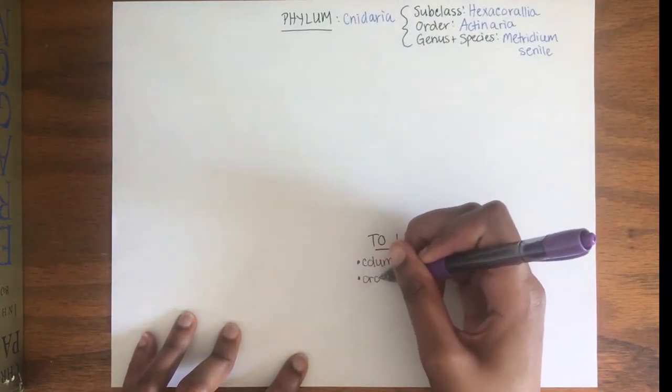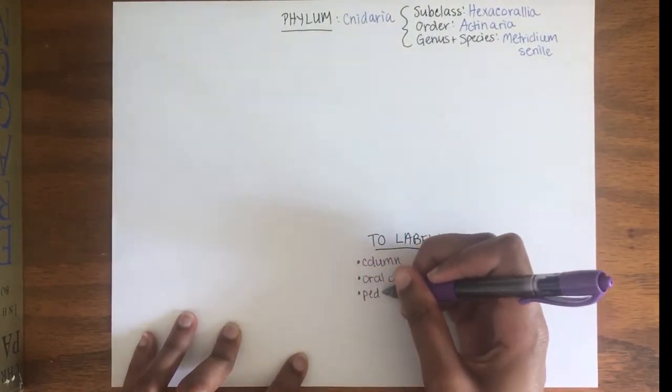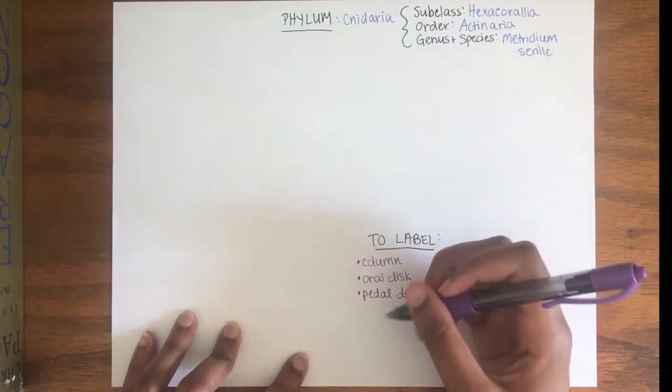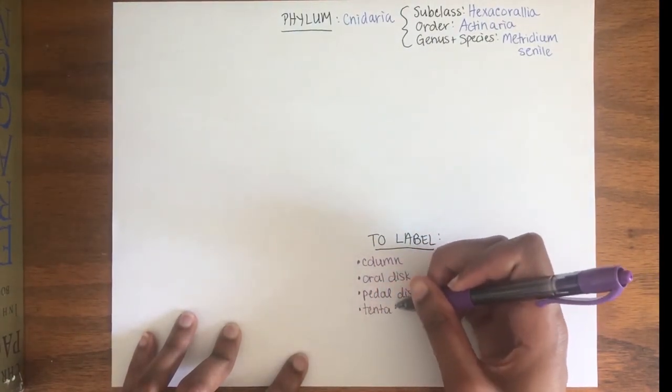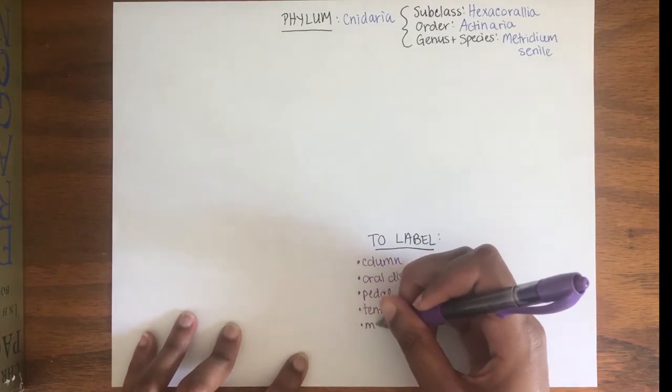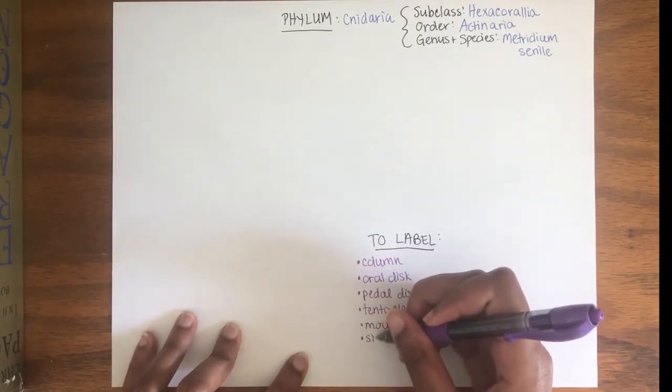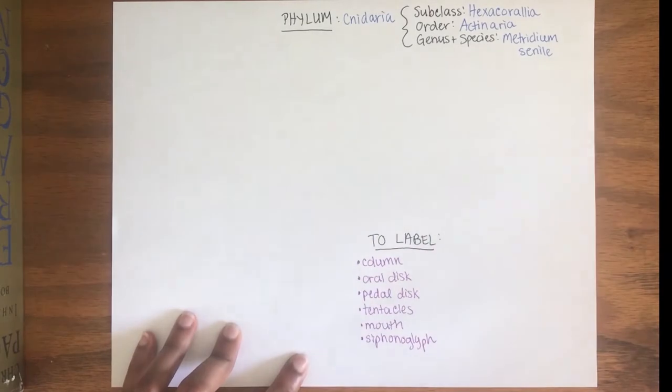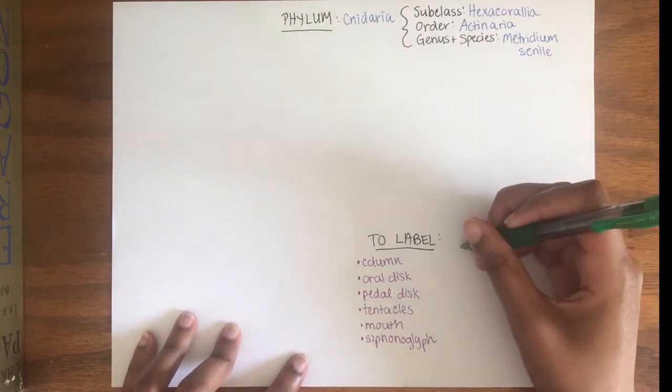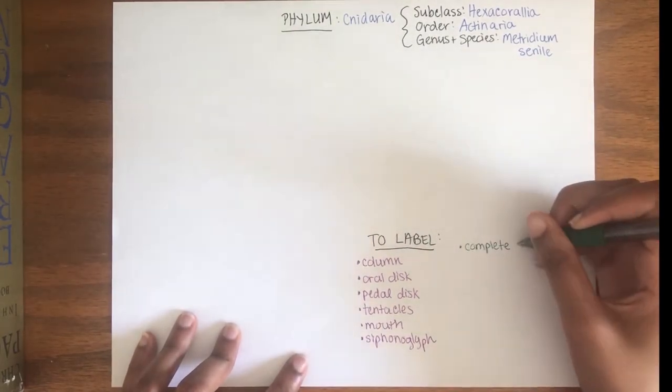include the column, the oral disc, the pedal disc, tentacles, mouth, and the siphonoglyph, which is made up of two grooves around the mouth that draw in water and help with respiration. Some other features of anemones include a complete